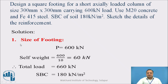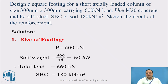Solution. The first step, we are supposed to find out the size of footing. For that we have to consider the load on the column. P is the load on the column, 600 kN, and the self-weight of the footing is usually taken as 10% of the load on the column, that is 60 kN. So total load is 660 kN.